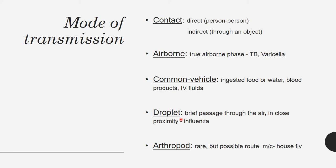The fourth mode of transmission is droplet — brief passage through the air in close proximity — which can cause influenza. The fifth is vector-borne, which is rare but possible, such as fleas causing bubonic plague caused by Yersinia pestis.